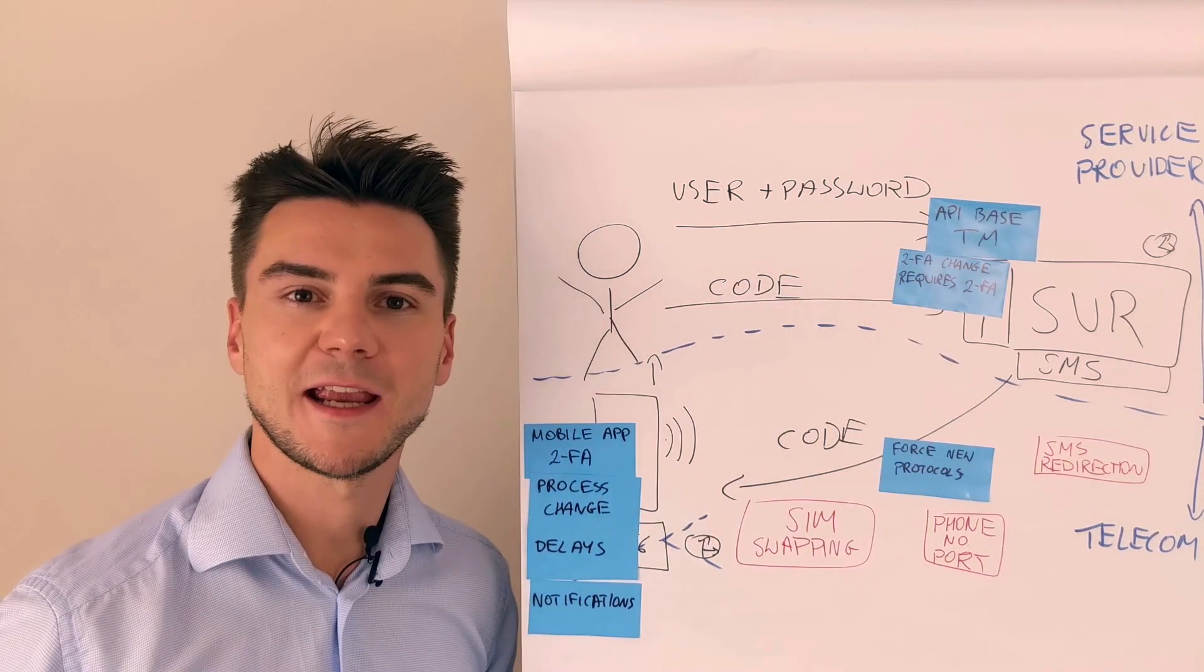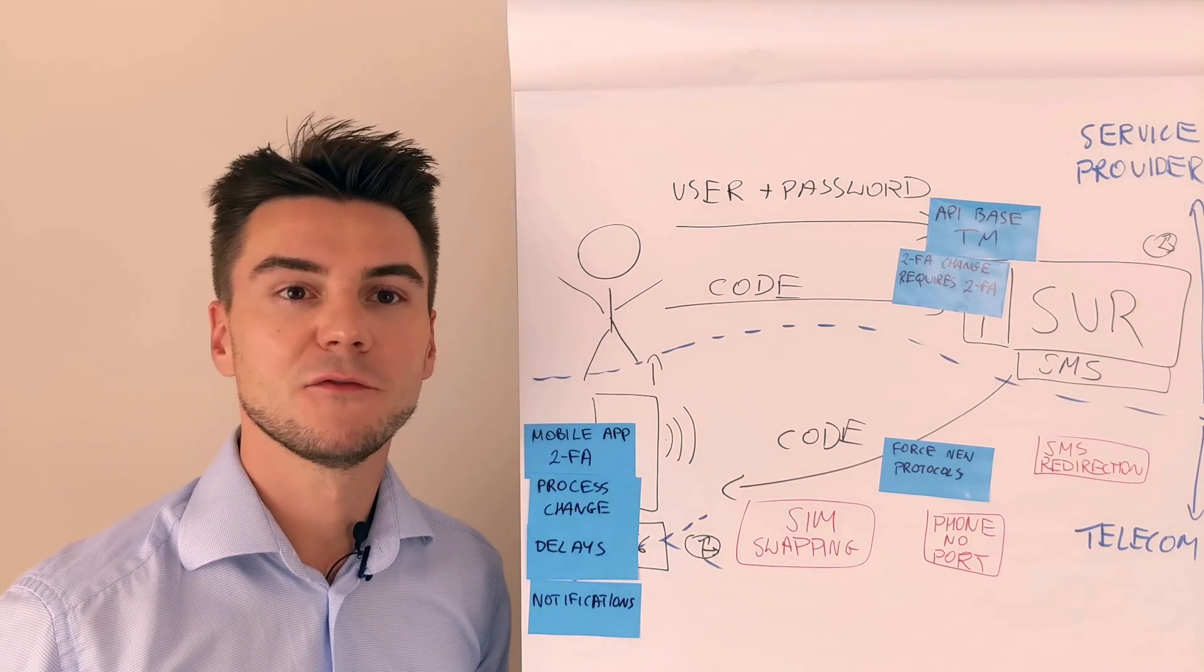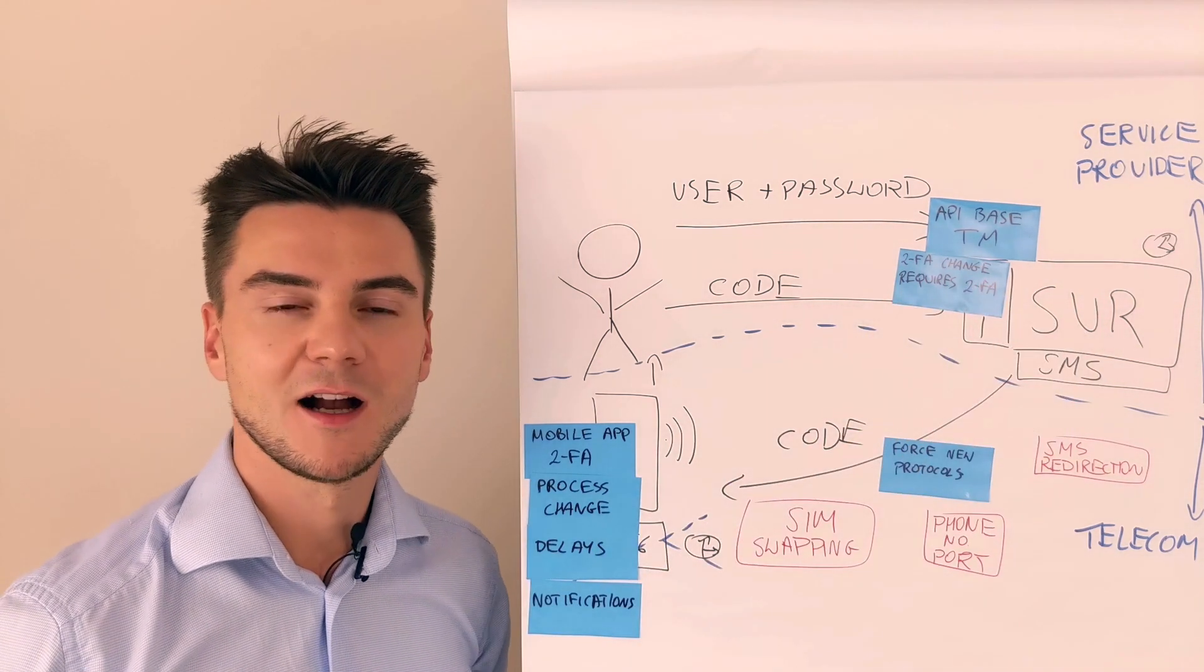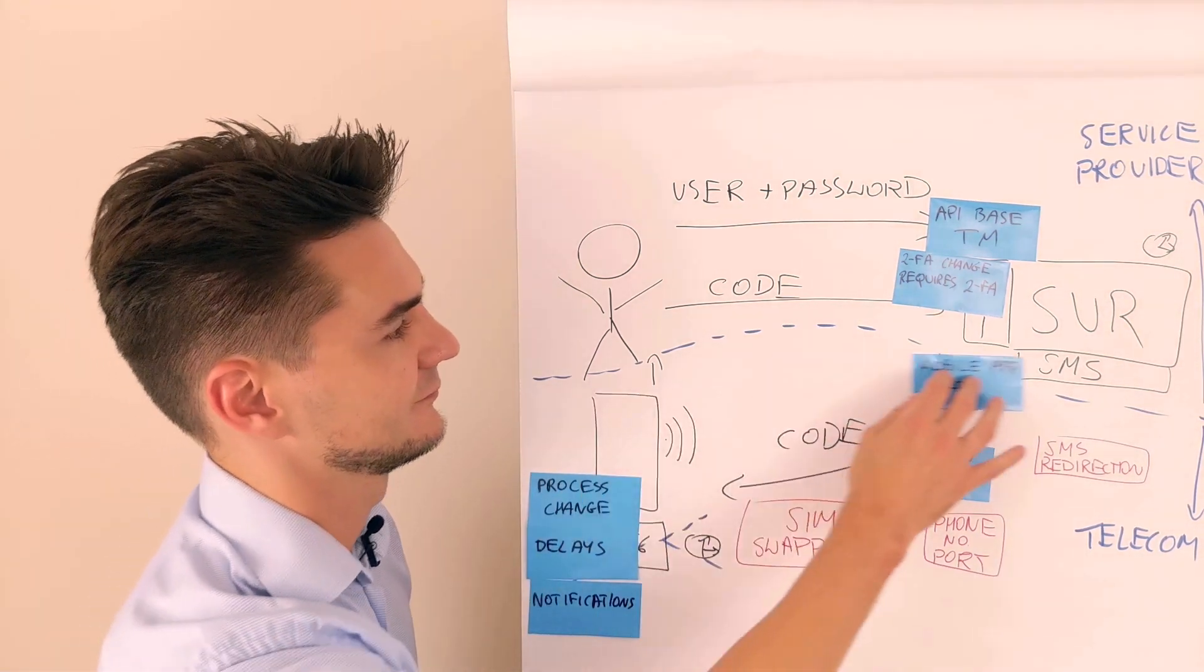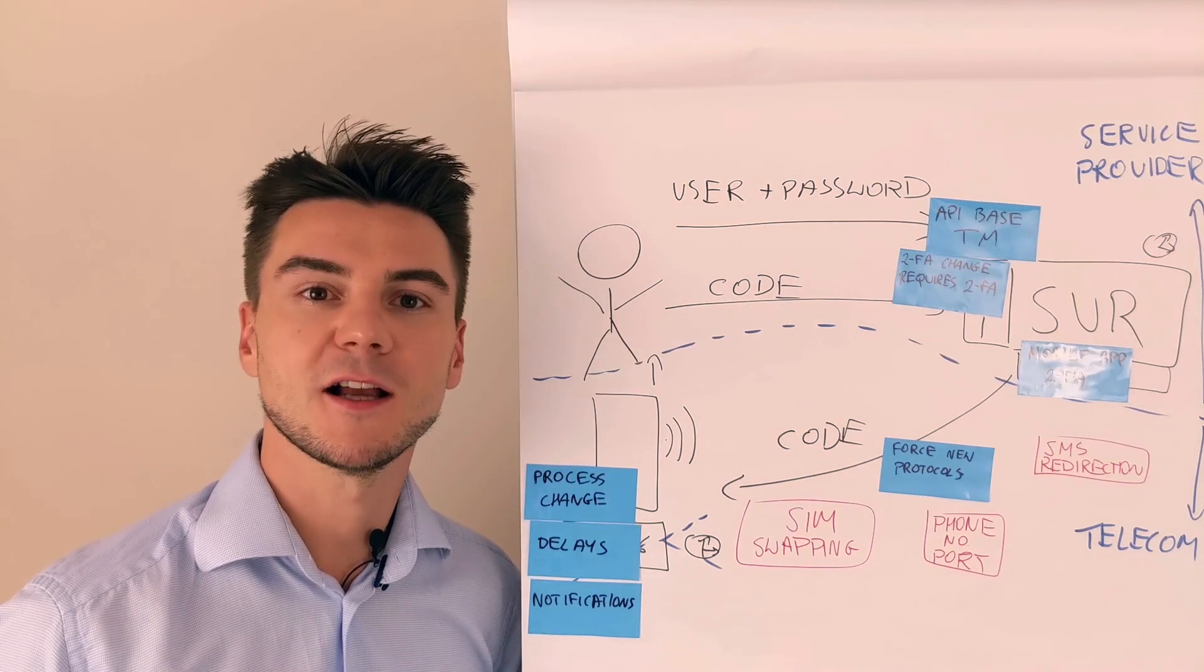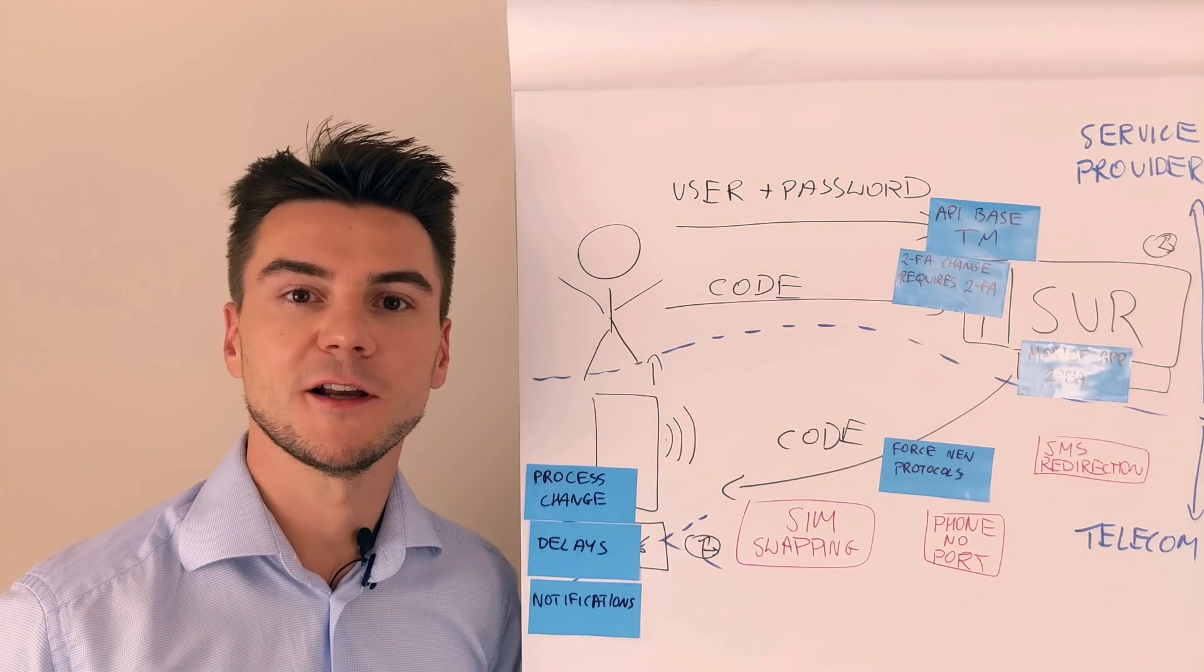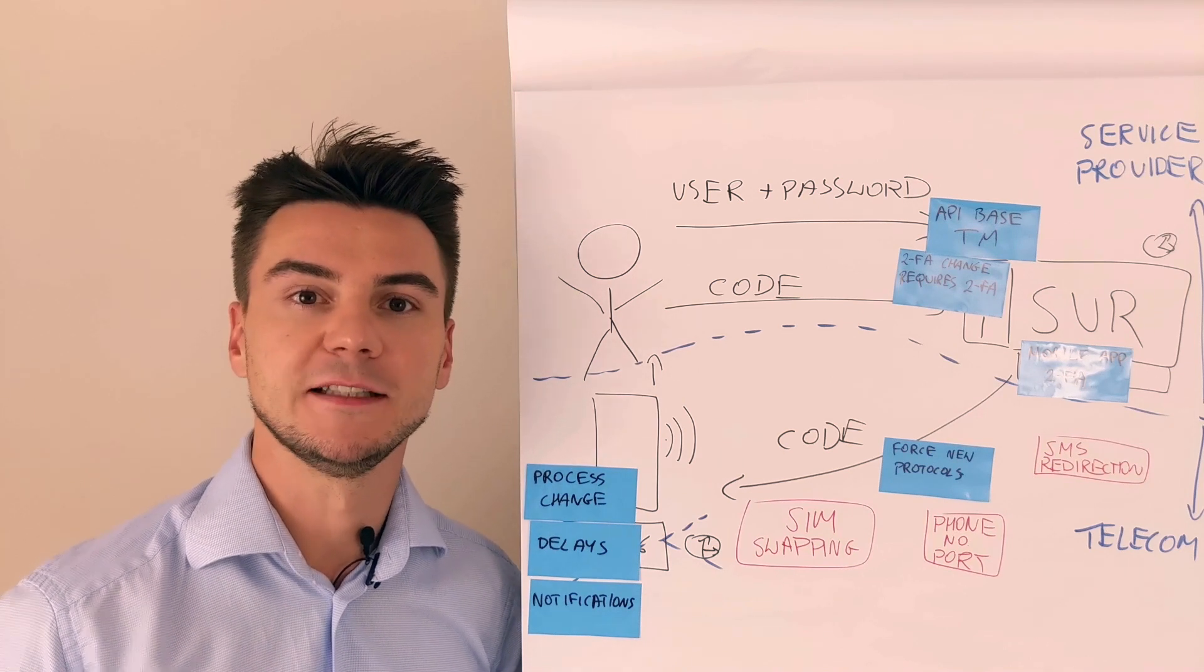For SIM swapping and phone number porting threats, there are two kinds of mitigations. For the service providers, just switch to mobile app 2FA authentication. The second one is for telecoms. SIM swapping and SIM card duplicates should require physical access to the telecoms branch and identity verification.